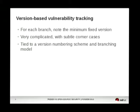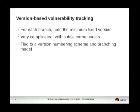Debian does this for unstable and stable distributions, and we've learned over the years that it is really complicated to cover all eventualities — but it works really well to some extent. Obviously version-based vulnerability tracking is tied to version numbering schemes and branch models, so you cannot use Debian version numbers on Ubuntu, or even on OpenSUSE or Fedora.